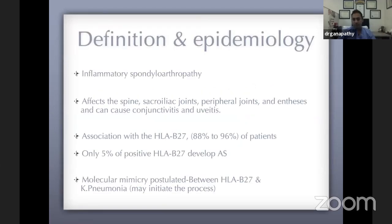As an introduction to ankylosing spondylitis: it is an inflammatory spondyloarthropathy that mainly affects the spine and SI joints — which is how you differentiate it from DISH. It can cause conjunctivitis and uveitis, which can be emergencies. There is an association with HLA-B27, but only 5% of patients with a positive HLA-B27 develop ankylosing spondylitis, making it not a very useful screening test. Molecular mimicry between HLA-B27 and Klebsiella pneumoniae has been postulated as a mechanism that may initiate the disease process.